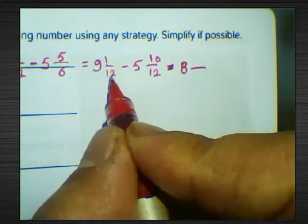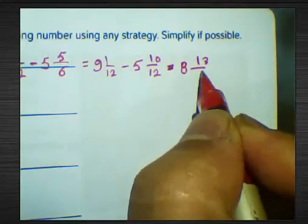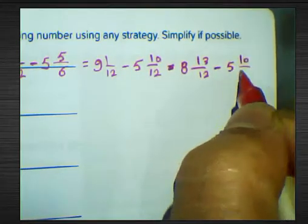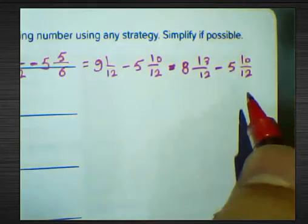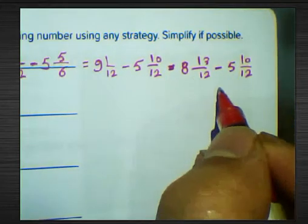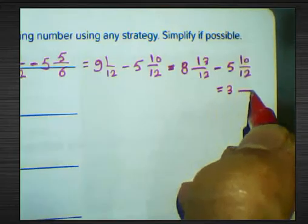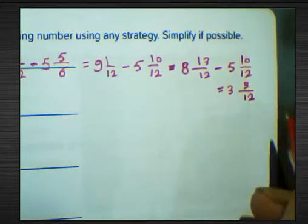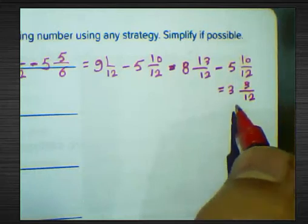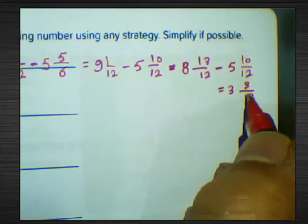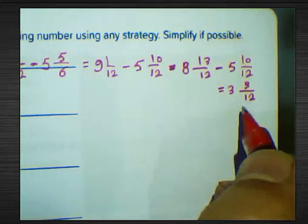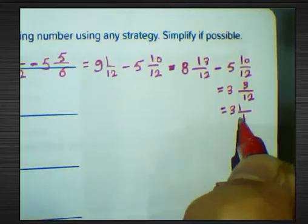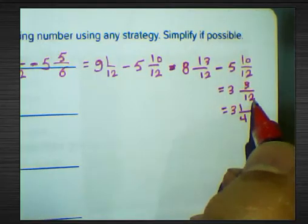Now we have 8 and 13 over 12 subtract by 5 and 10 over 12. Find the difference: 8 minus 5 equals 3, and 13 minus 10 equals 3. The numerator is 12. Simplify 3 over 12 by dividing by 3: 3 divided by 3 equals 1, and 12 divided by 3 equals 4. The result is 3 and 1 over 4.